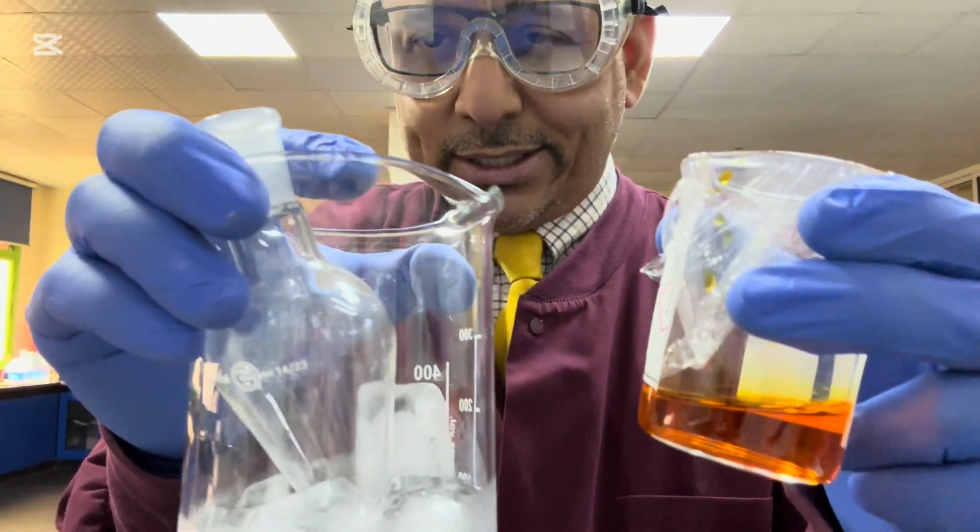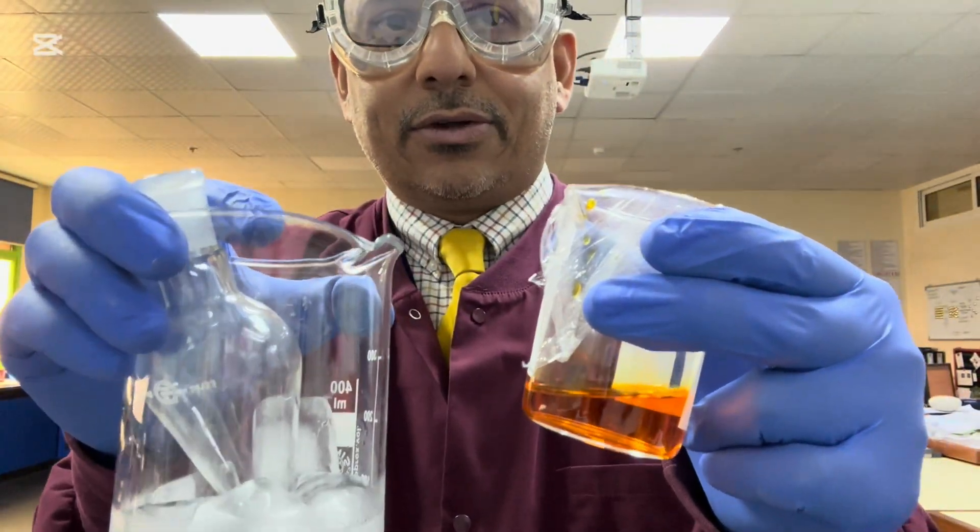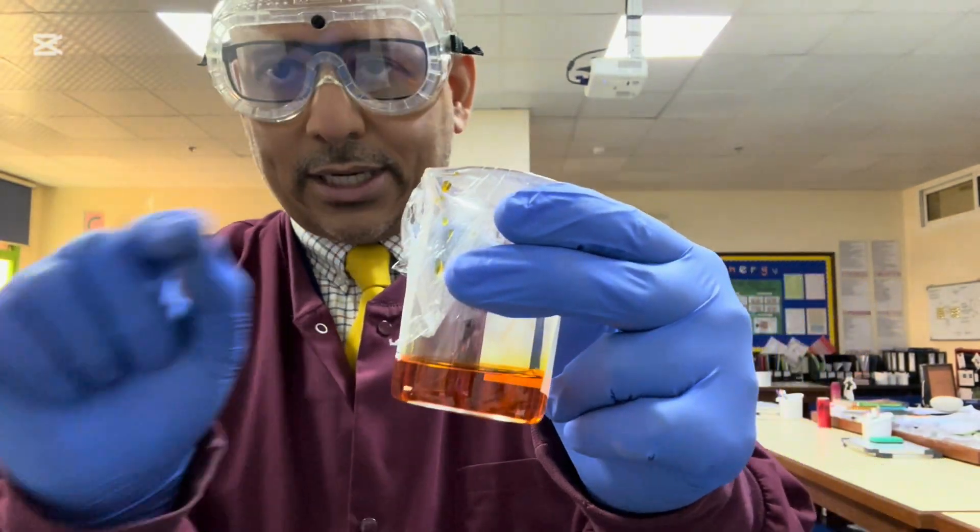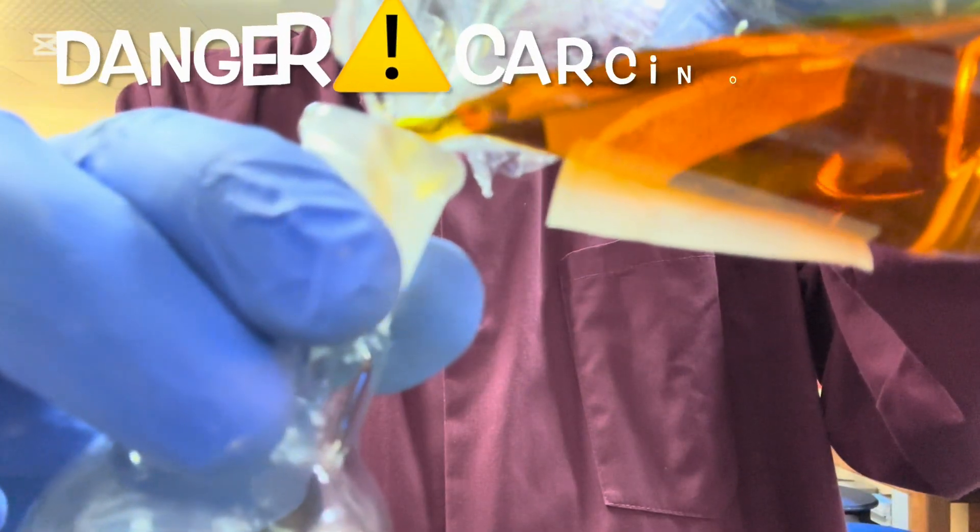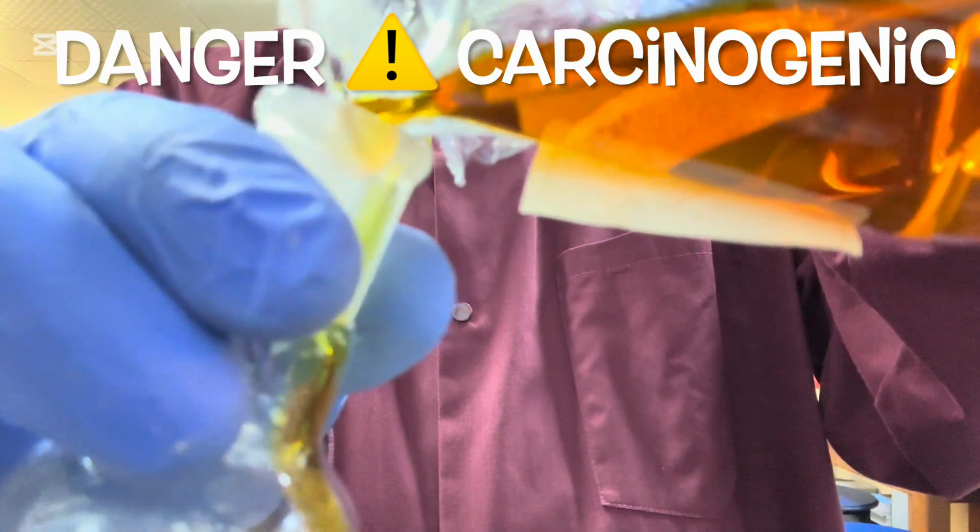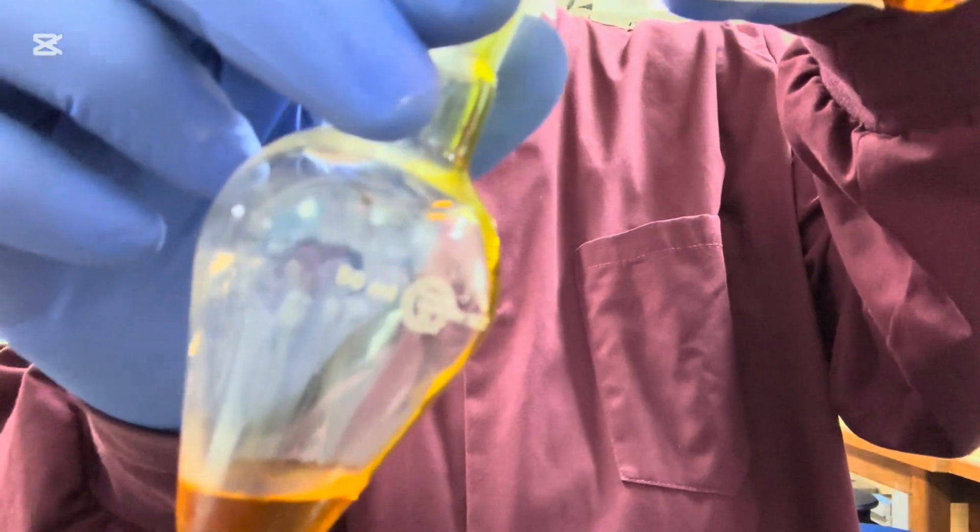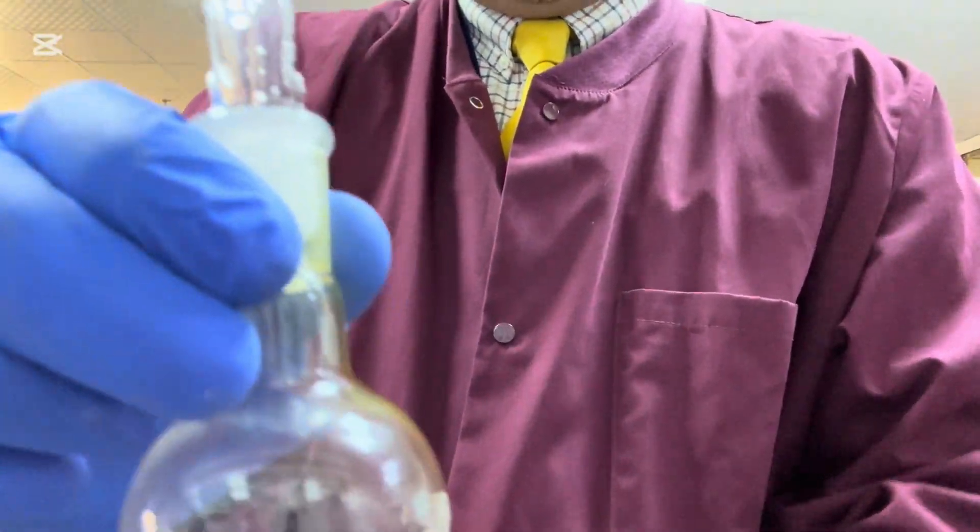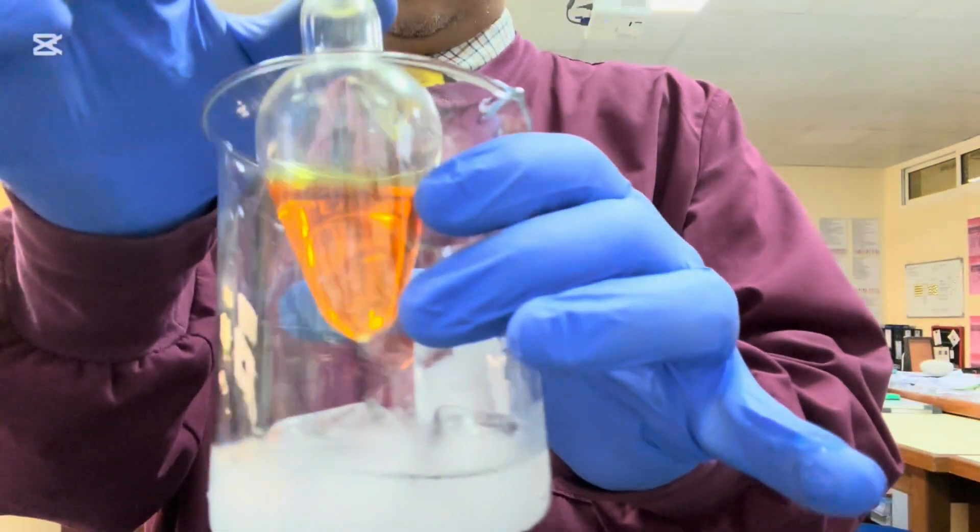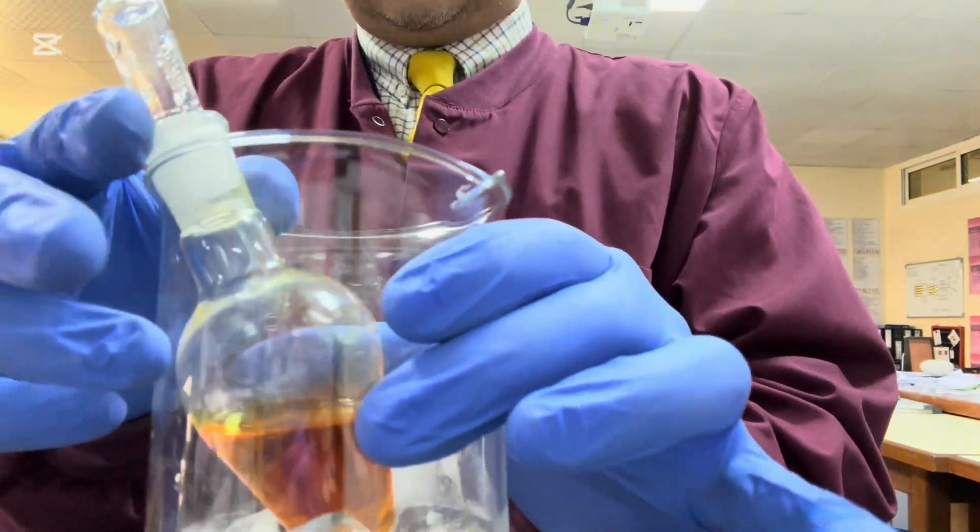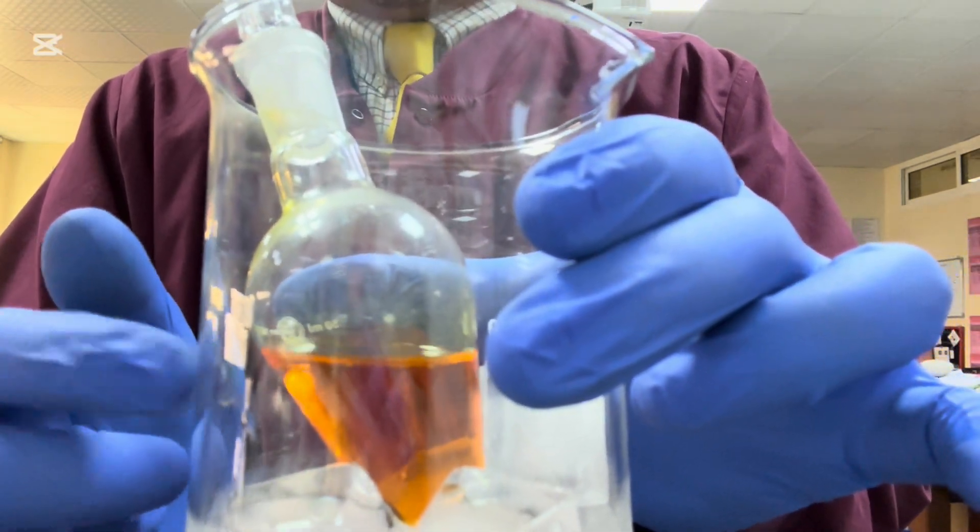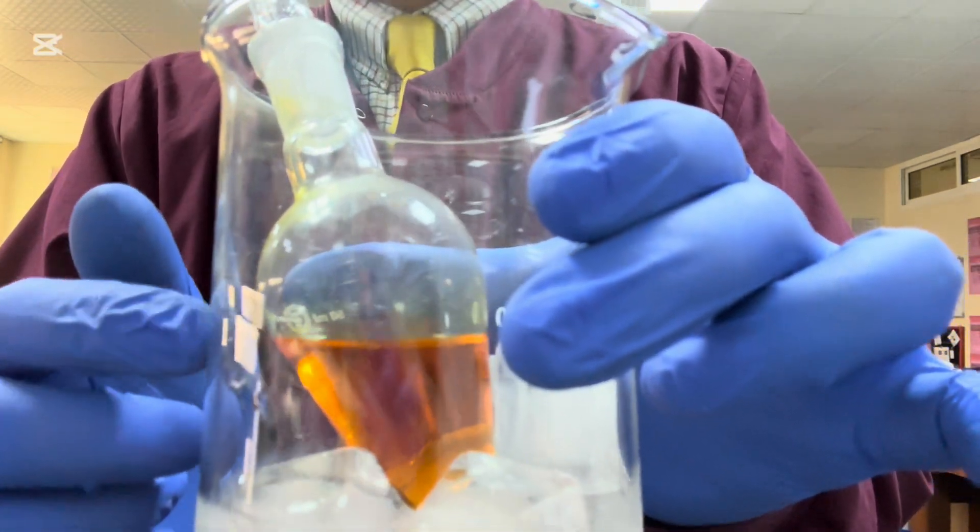And then while that's cooling down, I'm going to set up a flask for distillation, keeping the flask in the ice bath. So I'm going to add it right now, very slowly, so that I don't have any spillages whatsoever. What I'm now going to do is I'm now going to put it in my ice bath and let that cool down. I'll just fill it up to here with water, and I'll just wait a couple of minutes for that to cool down.